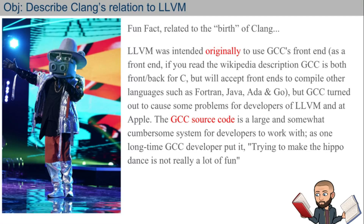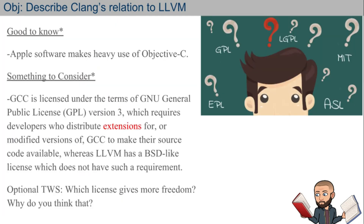In Apple's case, GCC caused some problems. The GCC source code is a large and somewhat cumbersome system for developers to work with. As one longtime GCC developer put it, 'trying to make the hippo dance is not really a lot of fun.' Apple uses Objective-C quite a bit. Also, GCC is licensed under the GNU General Public License, so there's a slight difference between both compilers' open source licenses.